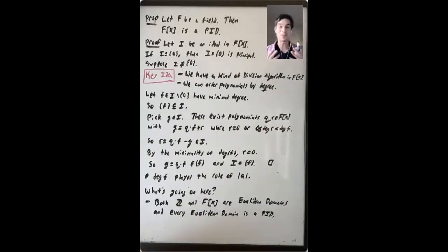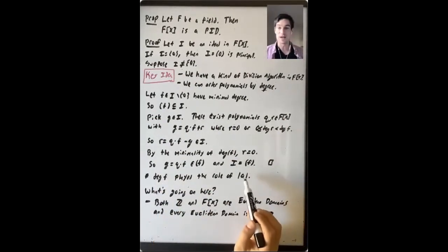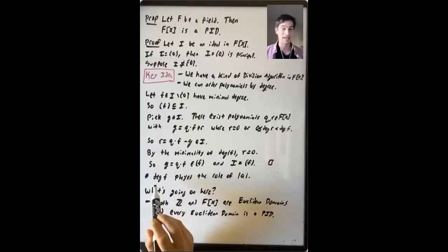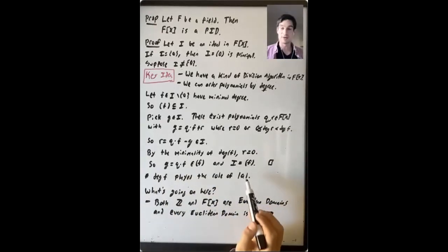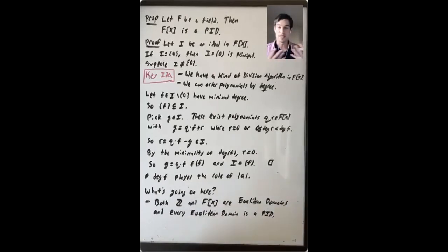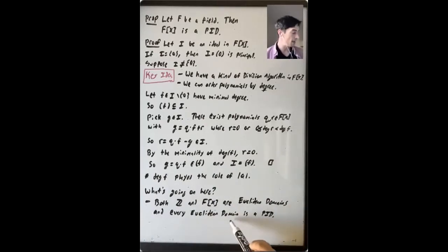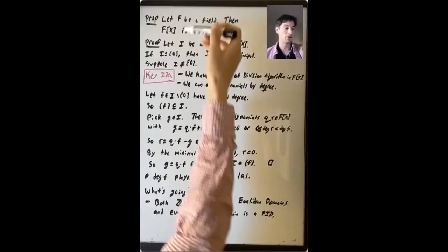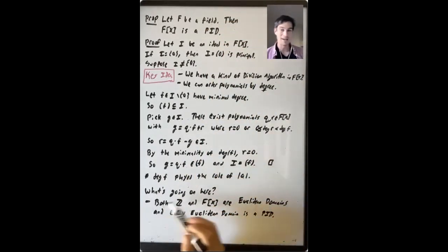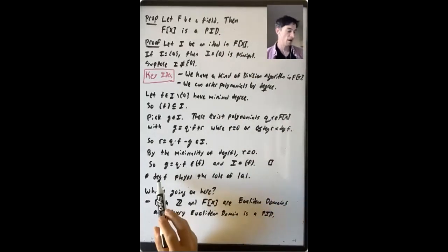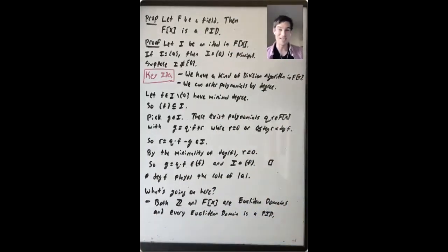This proof was just like the proof for Z. The one big difference was that degree of F played the role of absolute value of A — a special function taking elements to non-negative integers. What's really happening in both arguments is that Z and F[X] are not just principal ideal domains but Euclidean domains, and every Euclidean domain is a PID. In the next video, I will give a real definition for what it means to be a Euclidean domain.